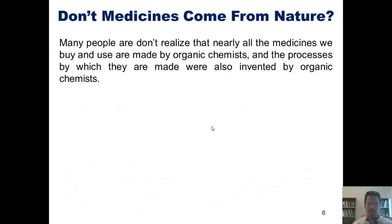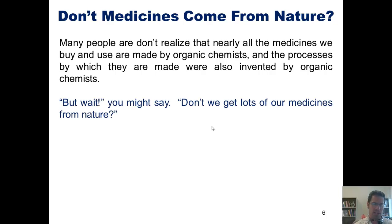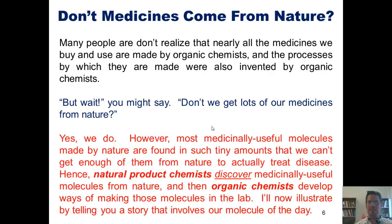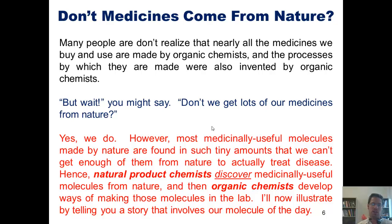Many people don't realize that nearly all the medicines that we buy and use as human beings are made by organic chemists, and the processes by which they are made are also invented by organic chemists and chemical engineers. You might say: don't we get a lot of our medicines from nature? Yes, we do. However, most medicinally useful molecules made by nature are found in such tiny amounts that we can't get enough of them from nature to actually treat disease. Hence, natural product chemists discover medicinally useful molecules from nature, and then organic chemists develop ways of making those molecules on large scale in the lab.